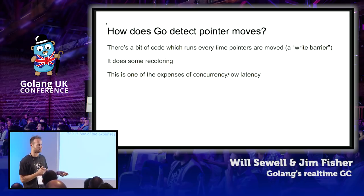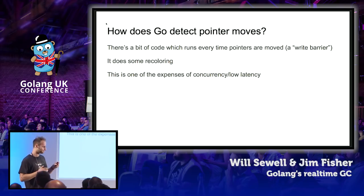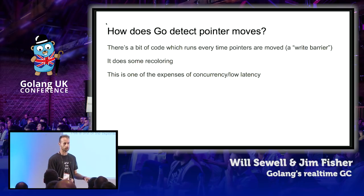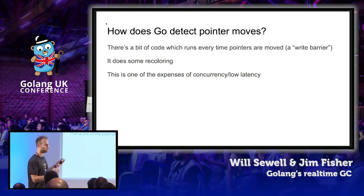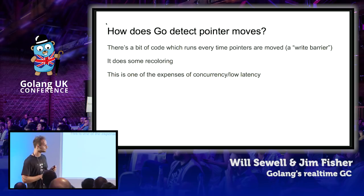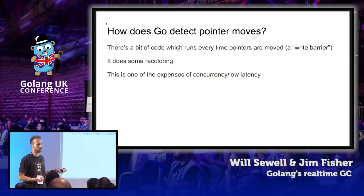You might be wondering how Go actually detects when pointer moves occur. Go is much more structured about how it deals with pointers than C or C++ — it knows when you are manipulating pointers. At each point in your program where pointers can be manipulated, Go compiles in something called a write barrier or memory barrier — a little bit of code that checks the color of these objects and colors them appropriately. This is a nice example of the trade-off between low latency and high throughput: because we wanted to run this algorithm concurrently, we have to pay the price of this memory barrier, which trades off some throughput.